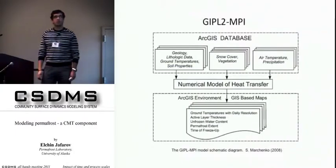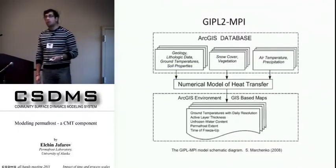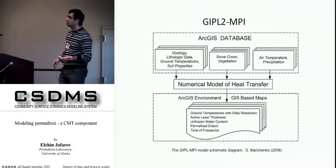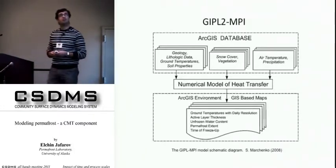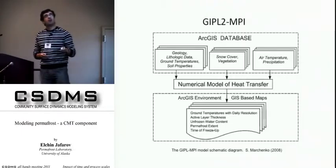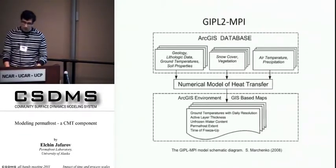This is the schematic representation of the model, GIPL2MPI. GIPL stands for Geophysical Institute Permafrost Laboratory. We build our input in ArcGIS format. The output is also in ArcGIS format, but now it's in netCDF as well.